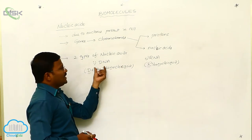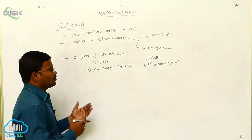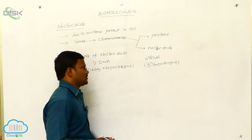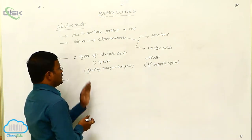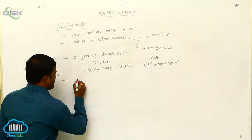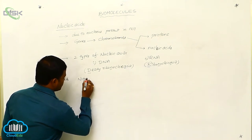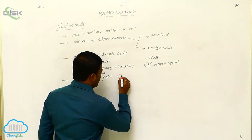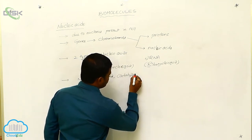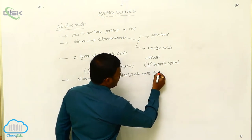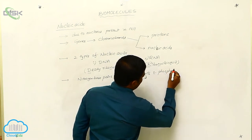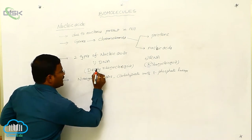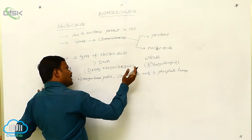Due to the presence of DNA and RNA, they are useful to transport characteristics from one generation to another generation. These two nucleic acids are also involved in protein synthesis. DNA and RNA are made up of nitrogen base pairs, carbohydrate units, and phosphate linkages.